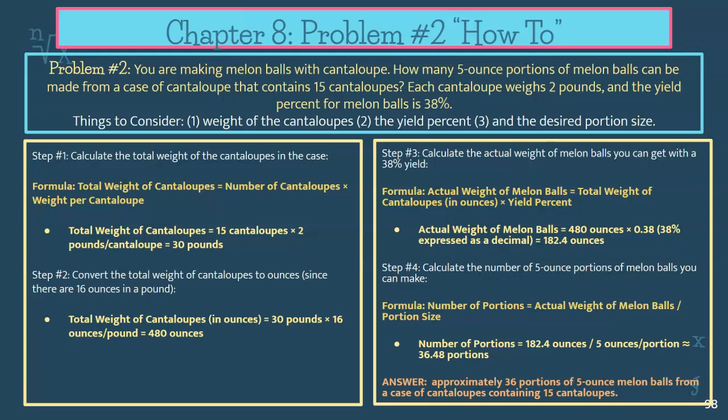Each case has 15 cantaloupes, so you're going to take 15 cantaloupes times two pounds, since each cantaloupe weighs two pounds, giving you a total of 30 pounds. So your as-purchased quantity is 30 pounds. You're going to convert that to ounces — there are 16 ounces in a pound — so you take your 30 pounds and multiply by 16, and you get a total of 480 ounces.